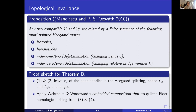To show that we get a canonical isomorphism in the case of the two kinds of stabilization, we use quilted Floer homology and in particular the embedded composition theorem in quilted Floer homology to show that we get an isomorphism of those Lagrangian Floer homologies.